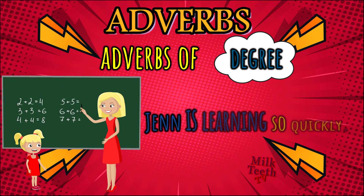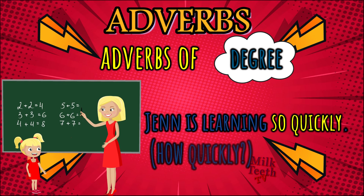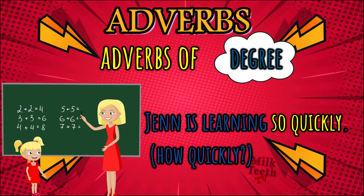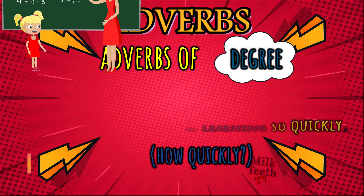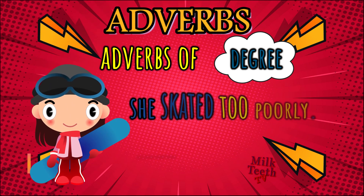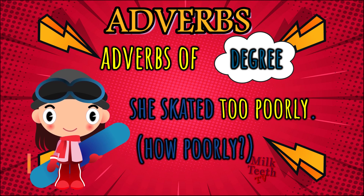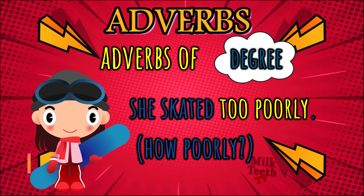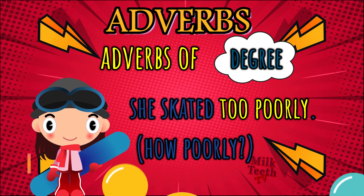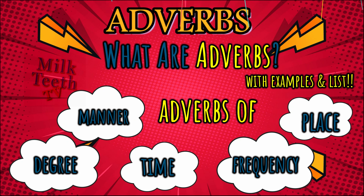Jen is learning so quickly — 'learning' is the verb, 'quickly' is the adverb answering how, and 'so' is another adverb used to modify the adverb 'quickly.' She skated too poorly — 'poorly' is the adverb used for the verb 'skated,' and 'too' is the adverb describing 'poorly' — so how poorly? Too poorly. This brings us to the end of another fantastic video — hope you understood more about adverbs!